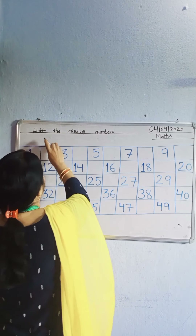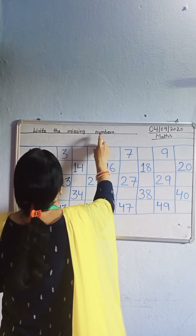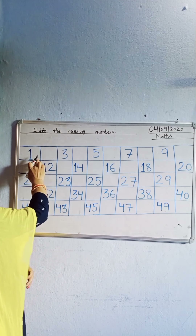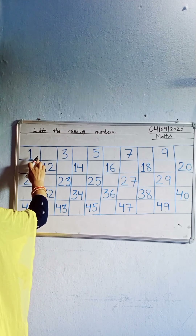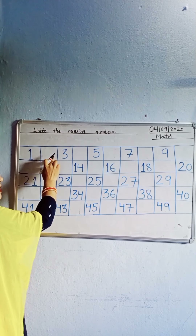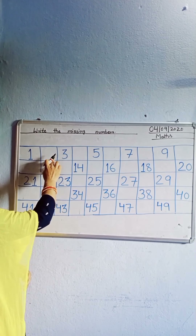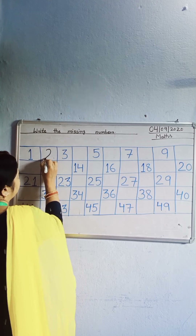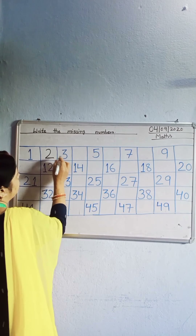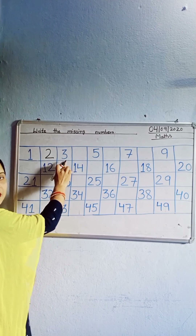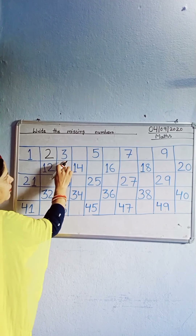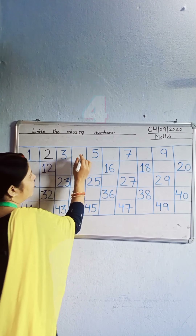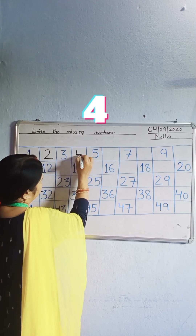Write the missing number. Which number, students? Look — 1. Which number is missing? 2. Write down 2. Which number? 3. Which number is missing? 4. Write down 4.